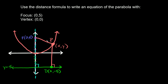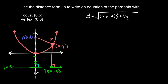So that was the big first step — coming up with coordinates for the focus, the random point on your parabola, and the directrix. Now that we have those three points, we can use the distance formula. The distance between any two points is equal to the square root of (x₂ - x₁)² + (y₂ - y₁)². To come up with the equation, we find the distance from our random point P to the focus and set that equal to the distance from P down to the directrix — PF = PD.